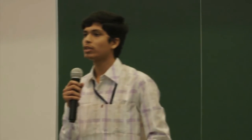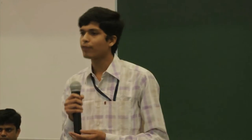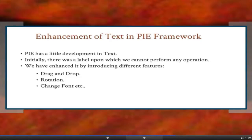Good afternoon one and all. I'm Chaitanya, here to present the theme regarding PI text. A text is a script that helps the user understand something — what we mean visually. As PI is a framework, we need to define some text. We define this text by using an object called PI Label, which was initially defined previously. The problem is that PI had very little development in text, so we have enhanced PI Label by adding many other features upon which you can perform many manipulations.